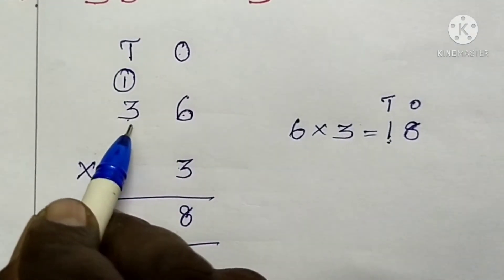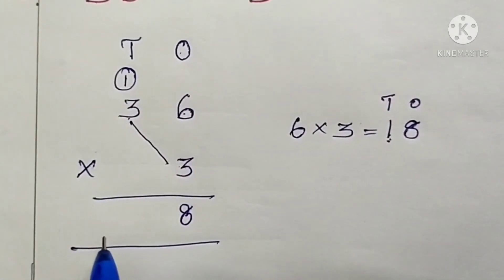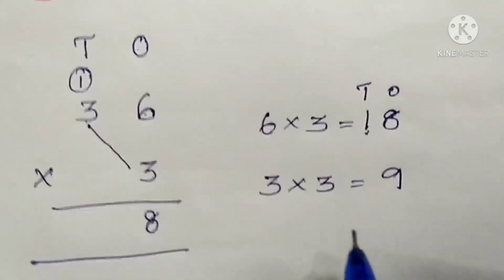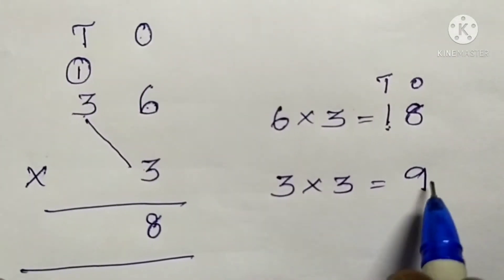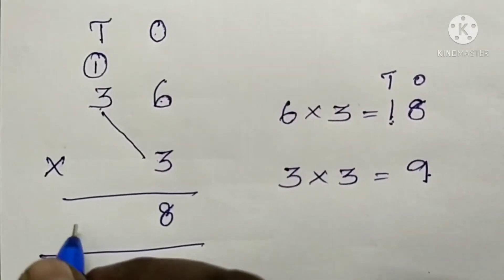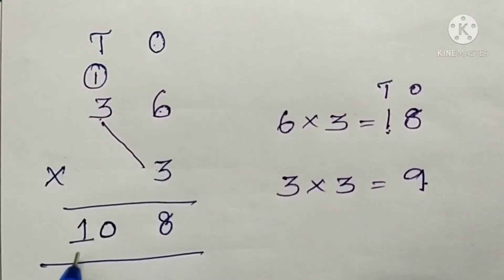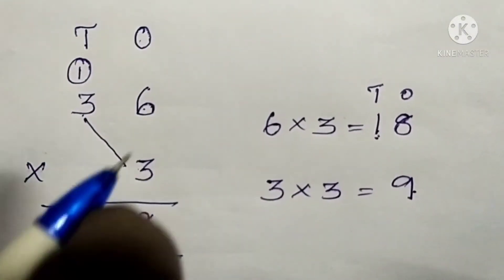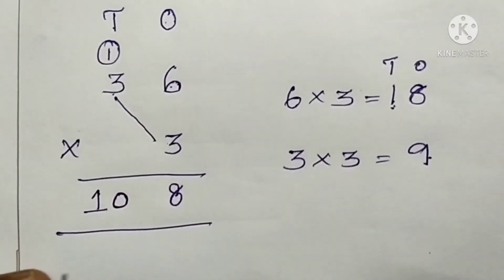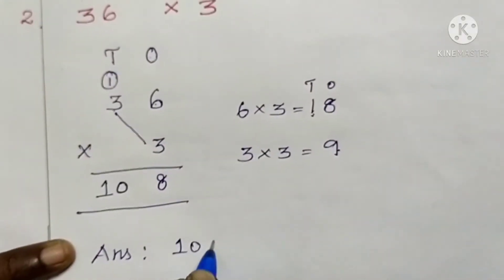Next, multiply the numbers at the tens place. Three threes are nine. Add nine plus one — ten. Write ten under the tens place. The product of thirty-six and three is one hundred and eight. So the answer is one hundred and eight.